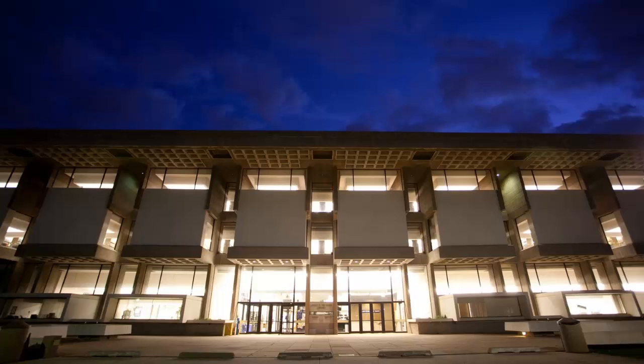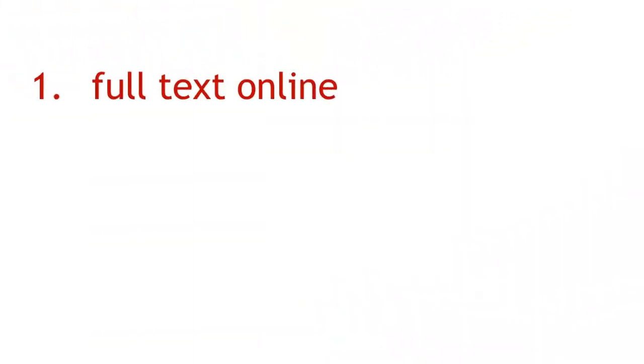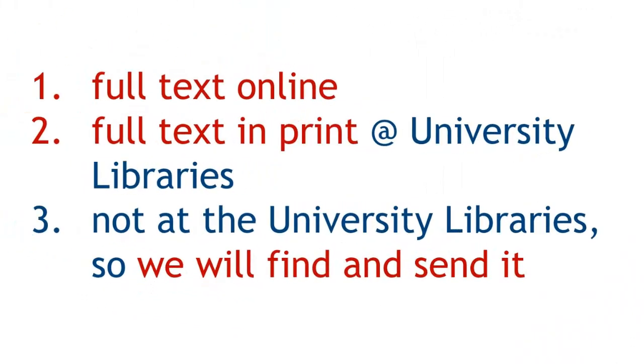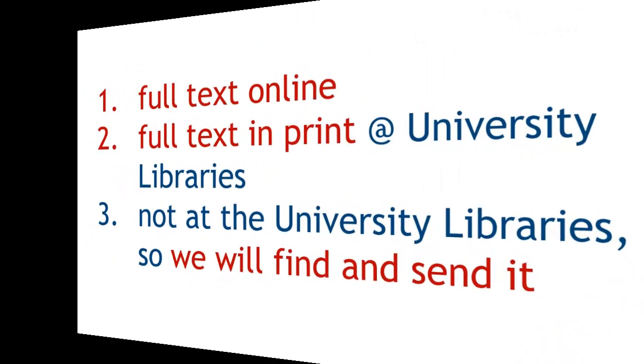Sometimes students come to the library not to search for journal articles on a topic, but rather to find an article they already have a citation for. Often, the university libraries will have the article you are looking for full text online, but sometimes the libraries only have the article in print, and sometimes the libraries don't have the exact article you need.